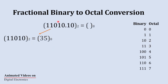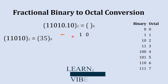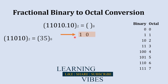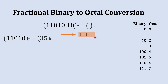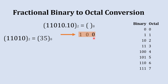Now the whole number part has been converted. It's time for the fractional number part, which is .10. We are going to write this 10 separately and start from this side, creating a group of three digits. We only have two digits, so we add one more 0 on the right-hand side — it will not make any impact on the value. Our three-digit group is 100.